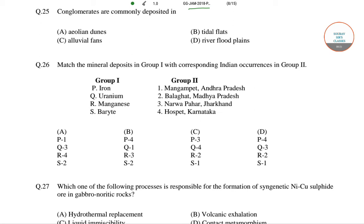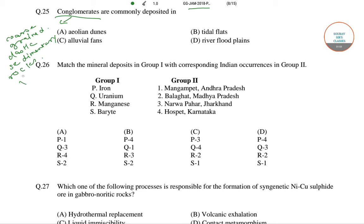The question is: conglomerates are commonly deposited in which of the following? Conglomerates are coarse-grained clastic sedimentary rocks that are composed of a substantial fraction of rounded to sub-angular gravel-sized clasts.